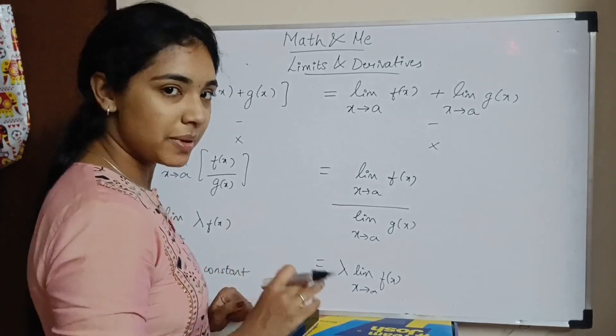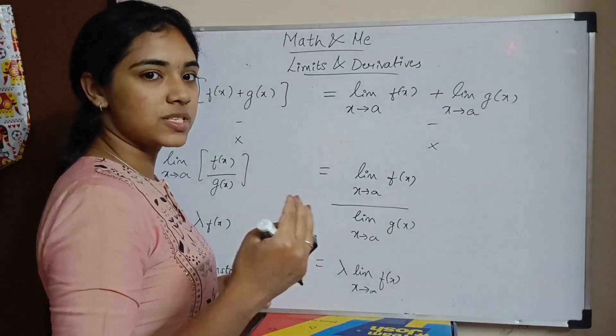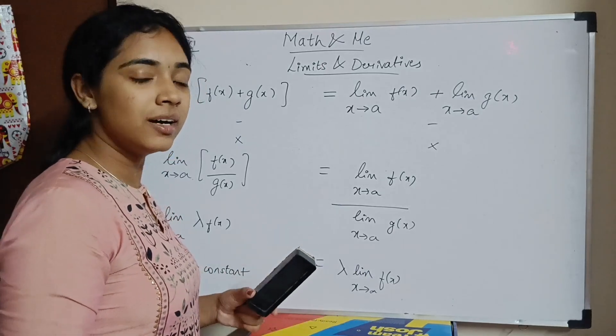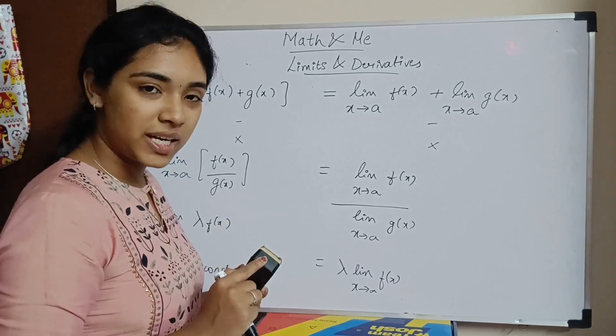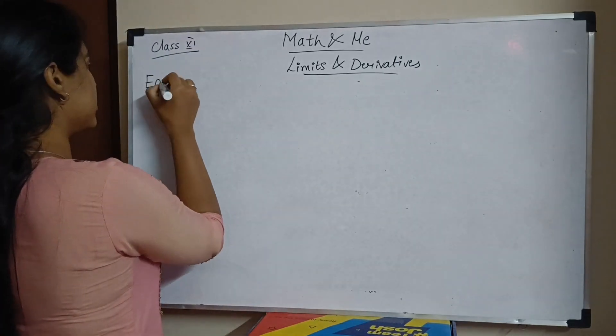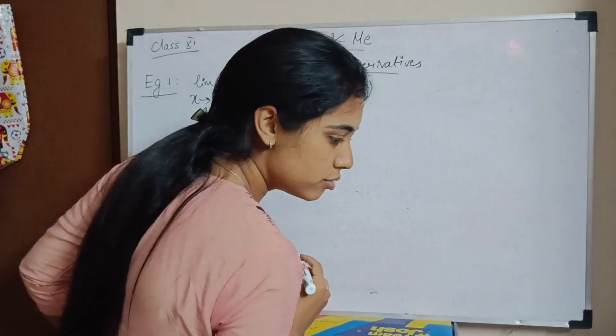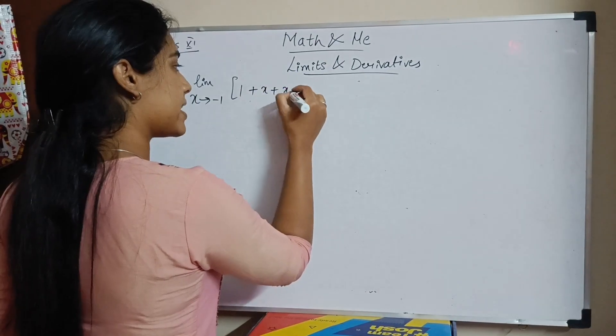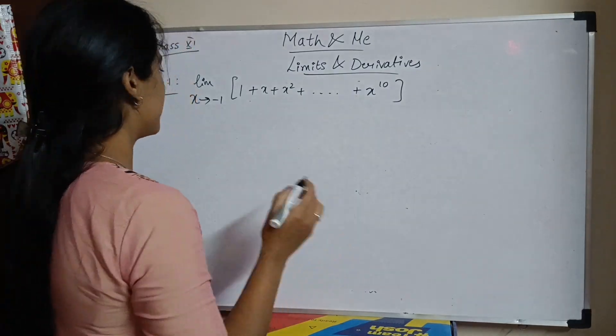Now I am going to solve some example questions. These are all very very easy questions, but just to give you an idea. If I miss any examples that you want me to solve, write them in the comment section or message me on the Instagram page Math and Me. I will try to help you with this. Example 1: Limit x tends to minus 1 of 1 plus x plus x square plus and so on up to x to the 10th.